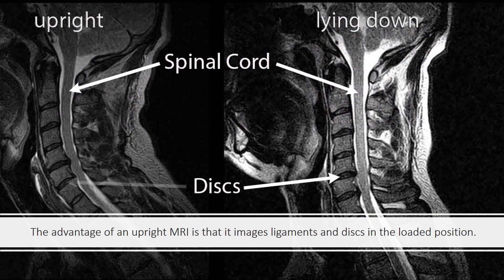An advantage of upright MRI is that it images the ligaments and discs in the loaded position. You can see here that the MRI on the right, lying down or supine, doesn't show as much spinal cord compression as the one upright.